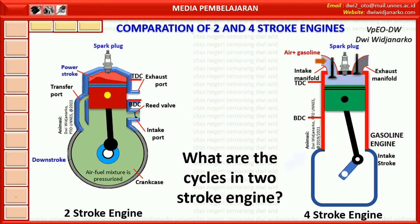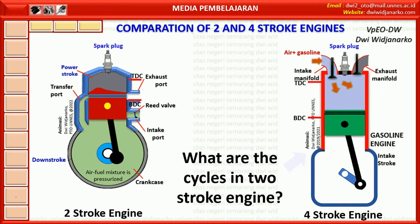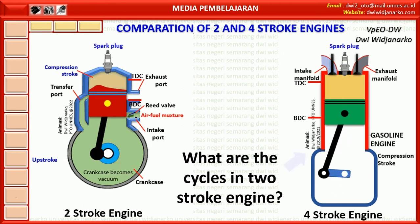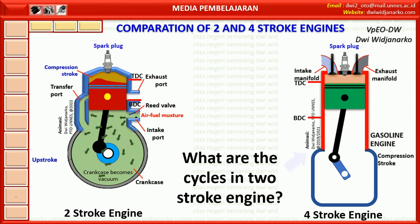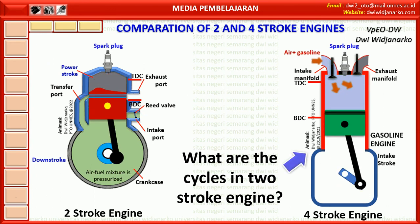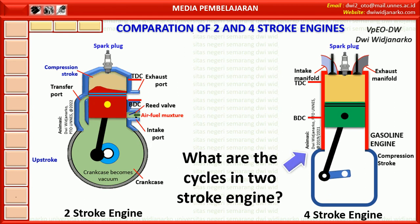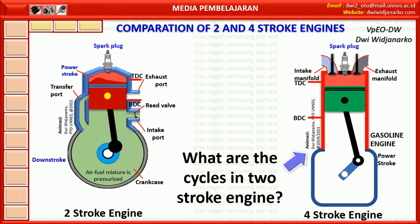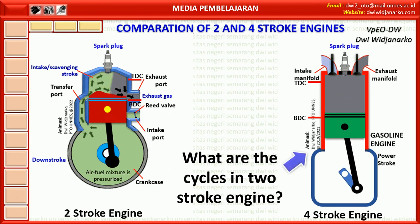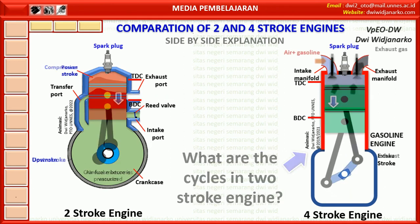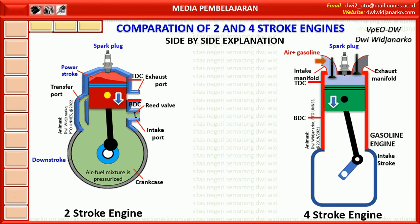A 4 stroke gasoline engine operates with 4 cycles: intake stroke, compression stroke, power stroke, and exhaust stroke. Now let us discuss each cycle that occurs in 2 and 4 stroke engines, with a complete explanation side by side. Explanation is carried out at the same piston movement position between 2 stroke and 4 stroke engines. Starting with the intake stroke on the 4 stroke engine.